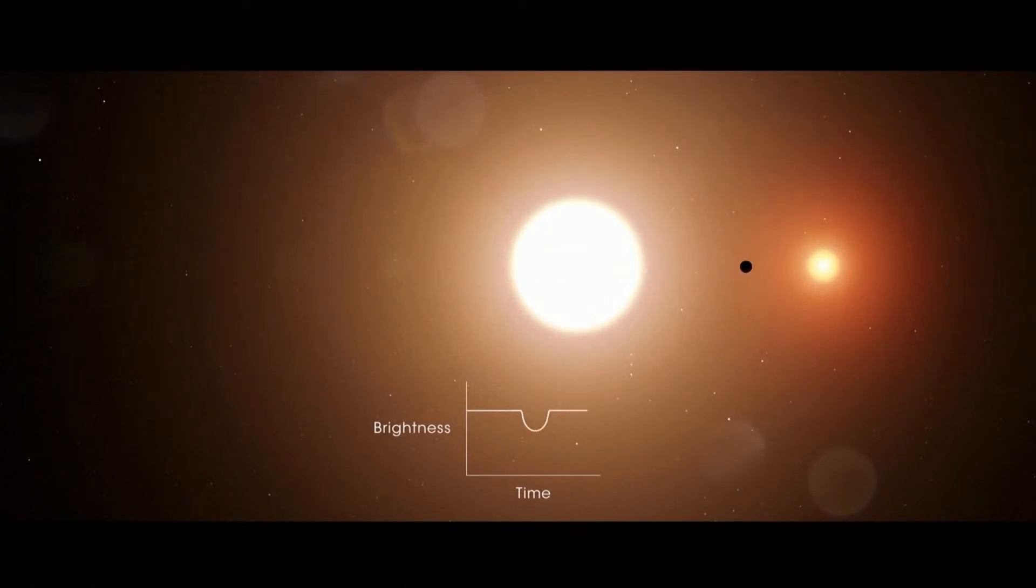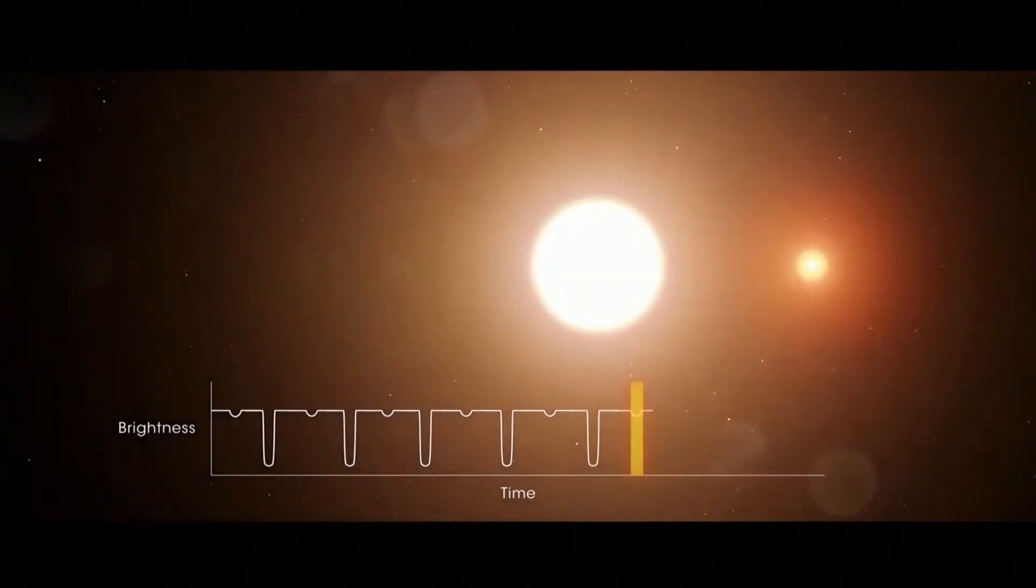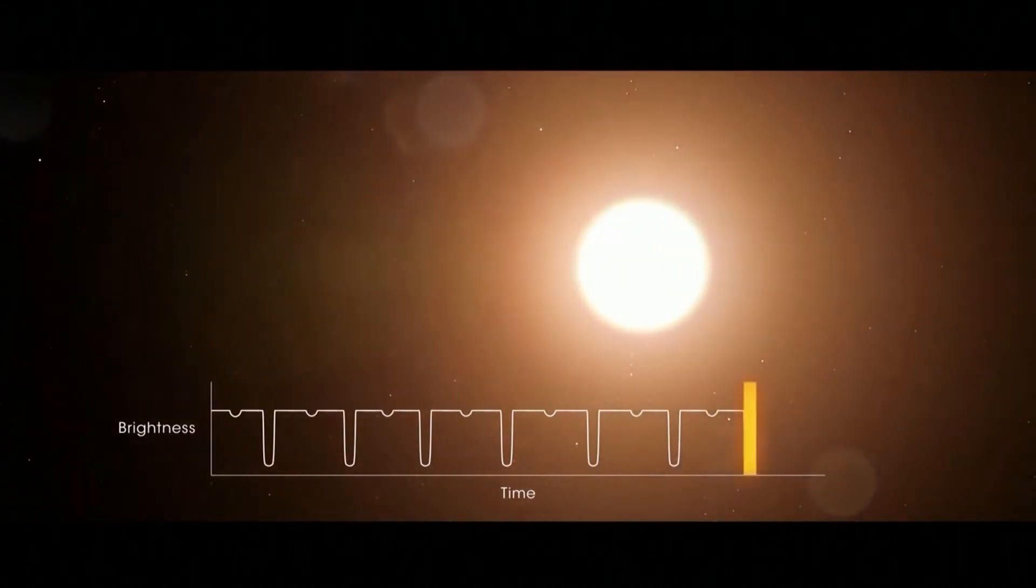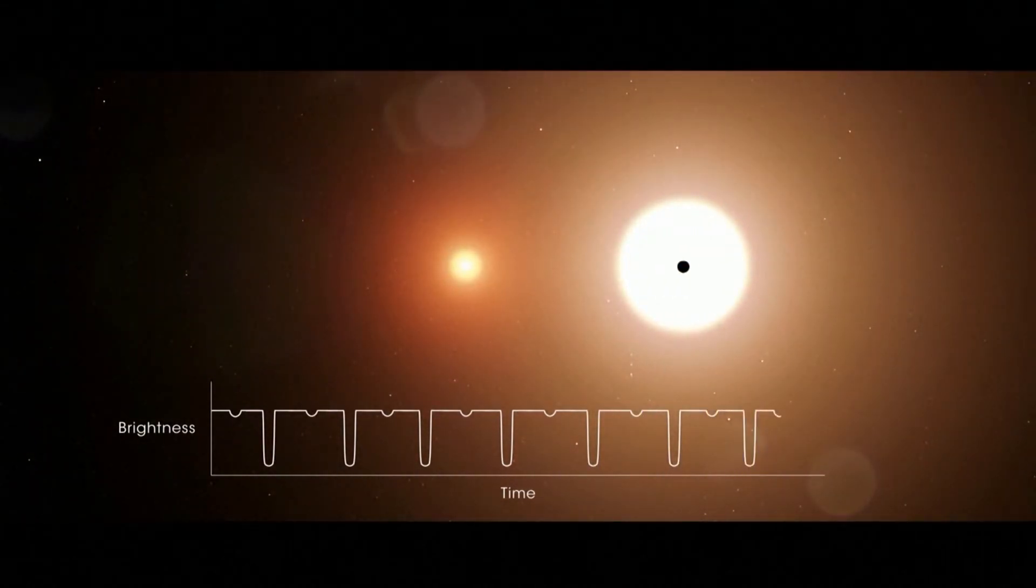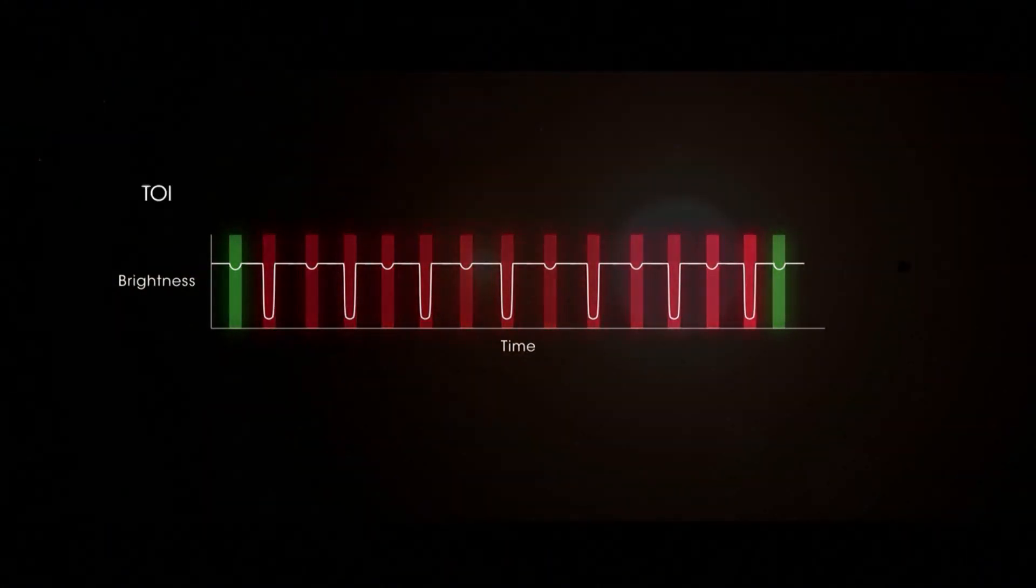TESS saw TOI 1338b's transits of the large star, but spotting them in the data wasn't easy. A high school intern examined hundreds of eclipsing binaries to search for planetary transits, which can look similar to some of the eclipses. Ultimately, he uncovered transits caused by the planet.